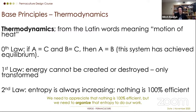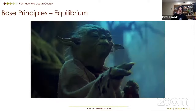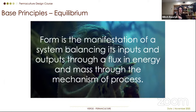To recap: A equals C, B equals C, therefore A equals B — that's equilibrium. Energy cannot be created or destroyed, only transformed. Entropy is always increasing — nothing is 100% efficient — but we need to organize that entropy to do our work by channeling it. What we see is the manifestation of a system balancing its inputs and outputs through a flux of energy and mass via the mechanism of process. The form we want to see is a thriving ecosystem where we can go outside and get food.